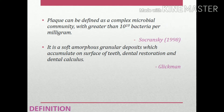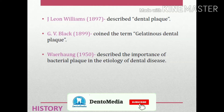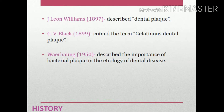Looking at the history of dental plaque: J. Leon Williams in 1897 first described dental plaque; Sir G.V. Black in 1899 coined the term 'gelatinous dental plaque'; and Borjeung in 1950 described the importance of bacterial plaque in the etiology of dental disease.